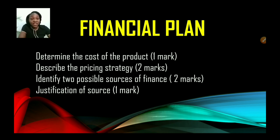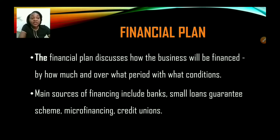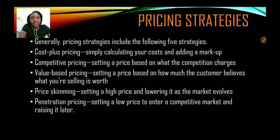Now let's look at the financial plan. You're supposed to determine the cost of the product, which is one mark. Describe the pricing strategy, two marks. Identify two possible sources of finance, two marks. And justify why you have chosen that source — stating the reasons why — and that would be another one mark. The financial plan discusses how the business will be financed, by how much, and over what period, with what conditions. Main sources of financing include banks, small loans, schemes, microfinancing, credit unions, and it may also be your personal savings.